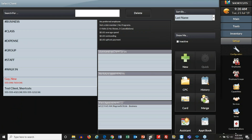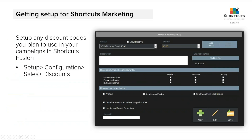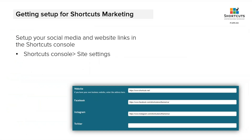Set your marketing options for your customers and set your discount reasons if you ever decide to send an email with some sort of coupon or promotion. Those are the first two things you should configure in the Shortcuts point of sale. As far as getting Shortcuts Marketing to recognize what links you want to include, this is something you configure in the Shortcuts Online console. This is where you go to update your social media links — your dedicated website, Facebook, Instagram, and Twitter — the big four.